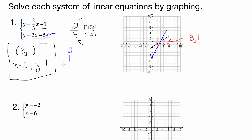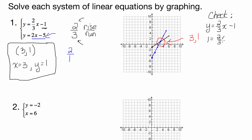It's so important that we check our work, because we've got to make sure that's right — we could have made a mistake. To do a check, we plug 3 in for x and 1 in for y into both equations. So for y equals 2/3x minus 1: is it true that 1 equals 2/3 times 3 minus 1? That gives us 1 equals 2 minus 1. Yes, it works!